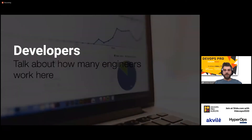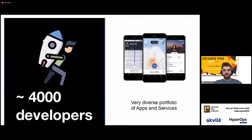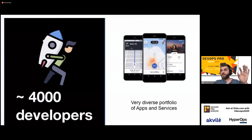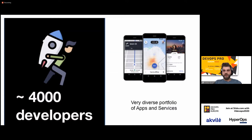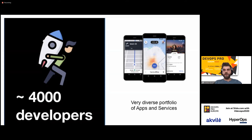But we want to talk about developers today. We're talking at roughly 4,000 developers — this always depends on how you count, whether you include a manager who maybe develops a couple of lines of code a week. These developers build a diverse portfolio of apps and services. You can not only order your taxi through Uber, but also order food and ship freight through other apps. It's not only a taxi service.